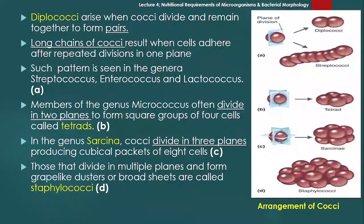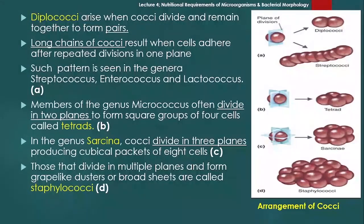Genus Micrococcus — often divides in two planes to form a square group of four cells called tetrads۔ یعنی Micrococcus کے members دو planes میں divide ہوتے ہیں، اس سے four cells بنتے ہیں جس کو tetrad کے نام سے جانتے ہیں۔ اسی طرح genus Sarcina میں three planes of division موجود ہوتی ہے۔